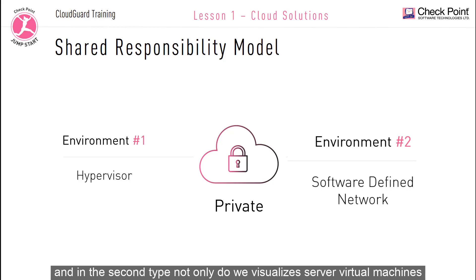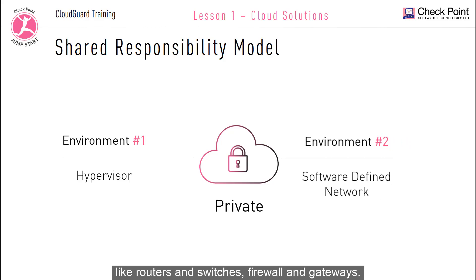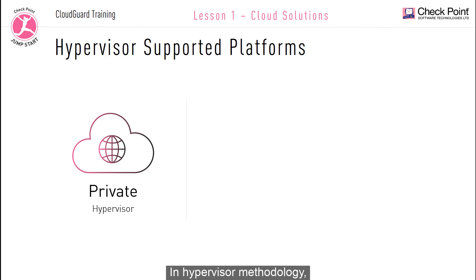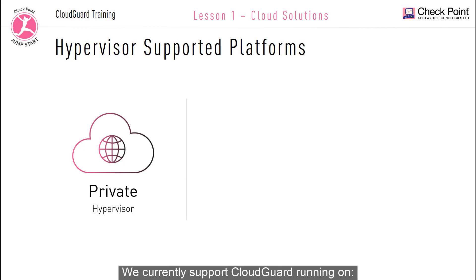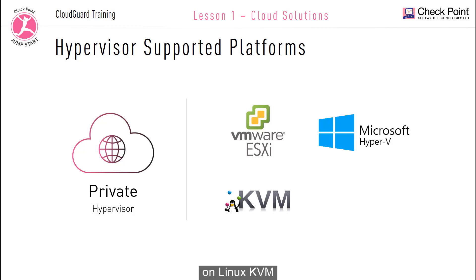In the software-defined data center type, not only do we virtualize servers and virtual machines, but we can also virtualize the whole gamut of network infrastructure, like routers and switches, firewalls and gateways. In the hypervisor methodology, CloudGuard is currently supported on VMware ESX, Microsoft Hyper-V, Linux KVM, and also on UNIX.